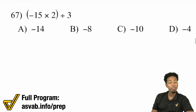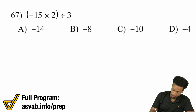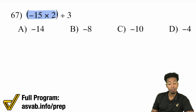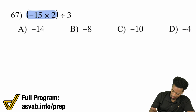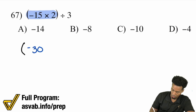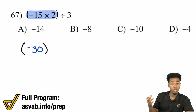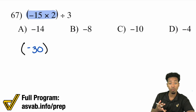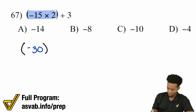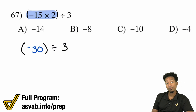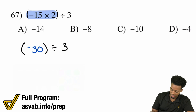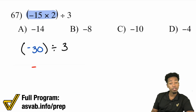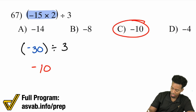Number 67: (negative 15 times 2) divided by 3. We'll take care of the parentheses first — negative 15 times 2: a negative times a positive is negative, and 15 times 2 is 30, so negative 30. Then a negative divided by a positive is negative. 30 divided by 3 is 10. So negative 10 is our answer.